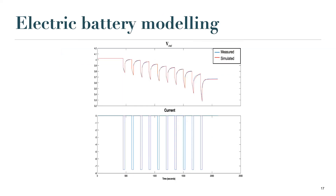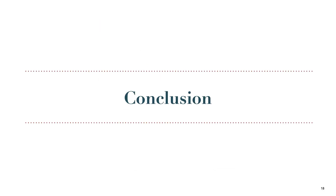The figure in this slide illustrates the agreement between the simulated output voltage and the measured output voltage derived from the electrochemical battery model. At the end of the simulation, the relative sum square error reached 6.77×10⁻⁵, which shows the ability of the developed model to emulate with accuracy the dynamic behavior of the battery.